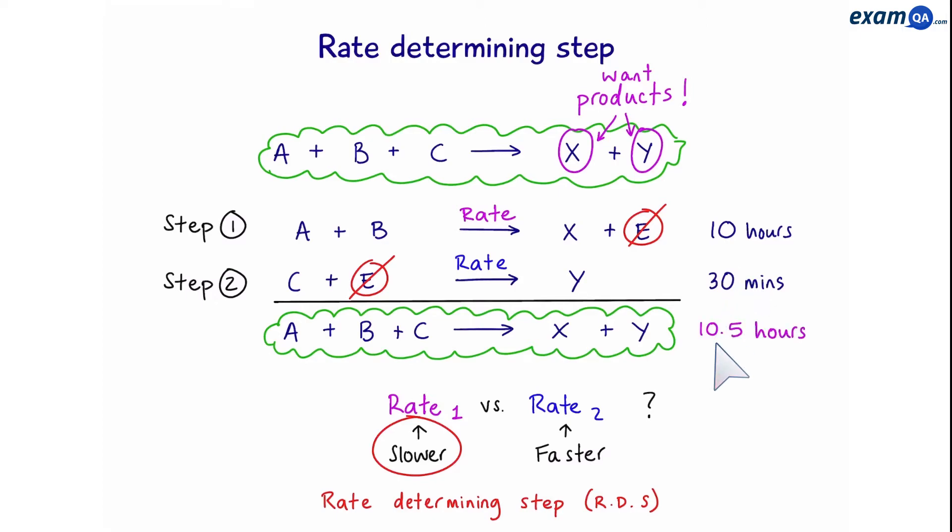That means, in order to get X and Y, I have to wait 10 and a half hours. If I want to reduce the waiting time for this reaction, which step do you think would make more sense to reduce? Of course, it will be the rate determining step, as it has the most influence, in this case, on the reaction.